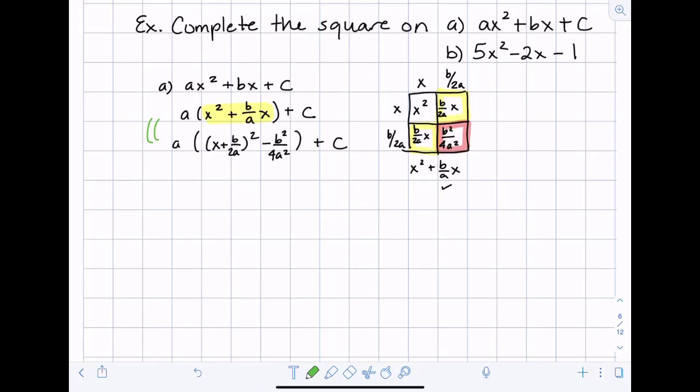So if I were to actually multiply it out we did the x plus b over 2a squared. That's this whole box and when we take away that red box we get x plus b over 2a squared minus b squared over 4a squared. We get back to our original.